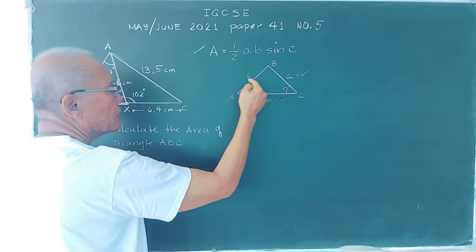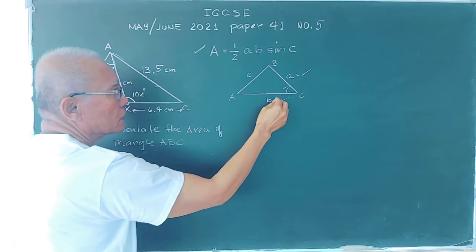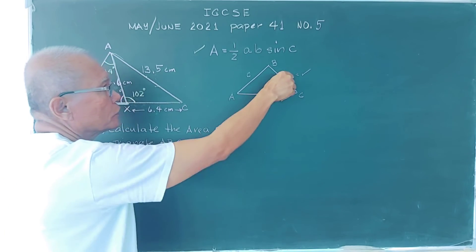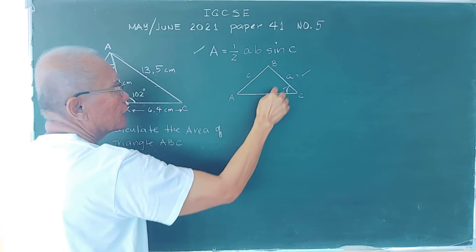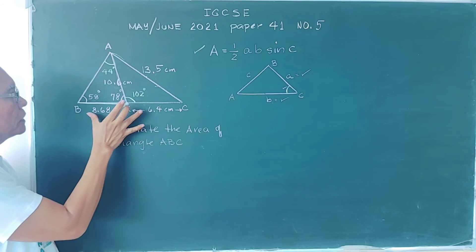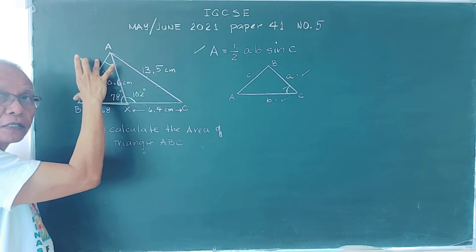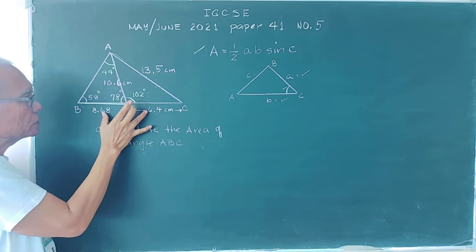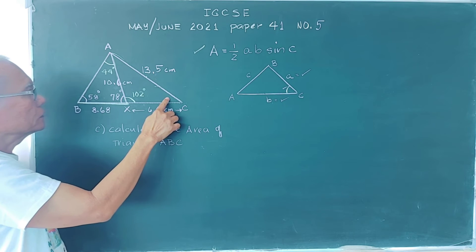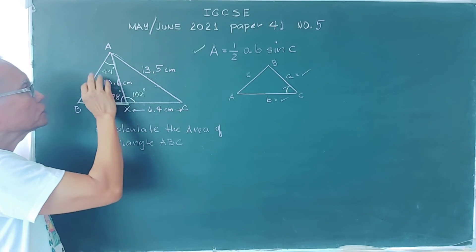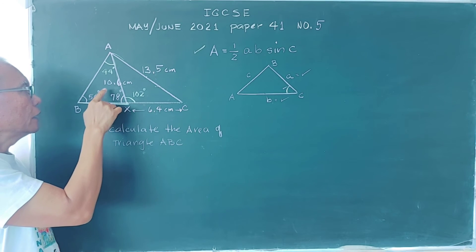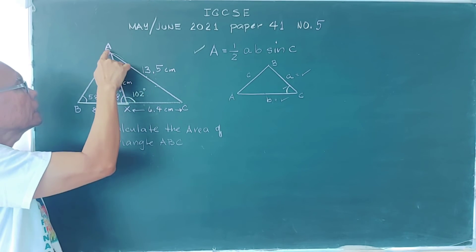In triangle ABC, the sides and included angle are not all directly available. We have some sides but the angle between them is not given for the full triangle. So we cannot apply the oblique area formula directly to the whole triangle. Instead, we divide triangle ABC into two smaller triangles: triangle ABX and triangle AXC, and find the area of each separately.